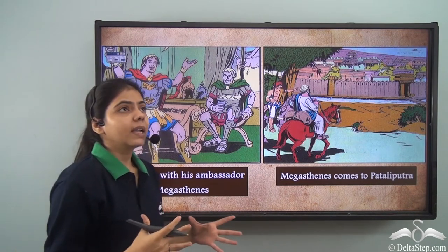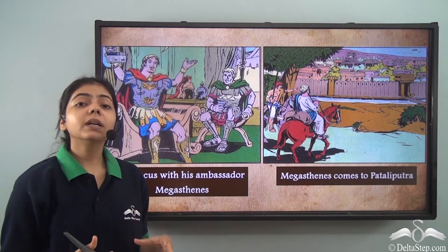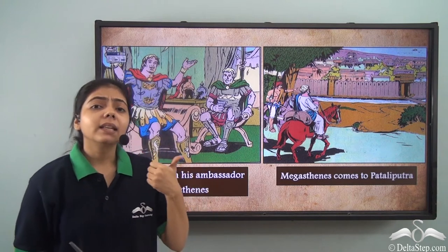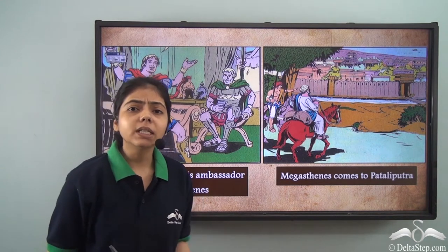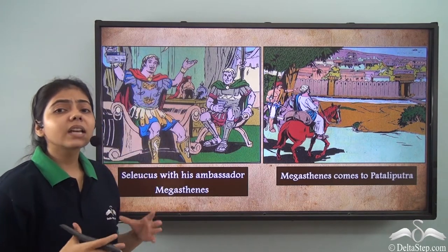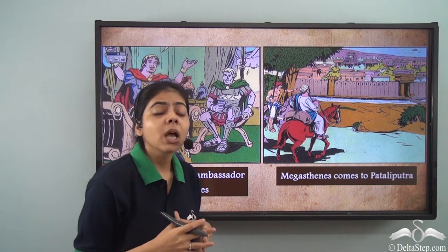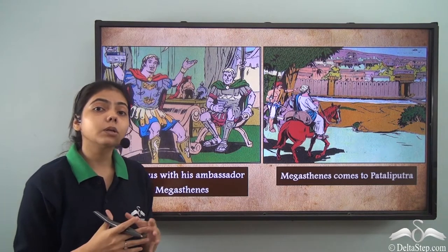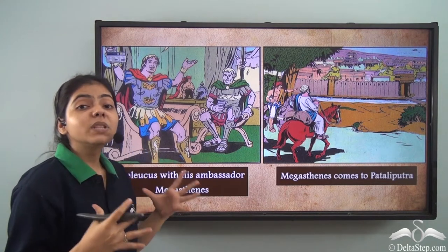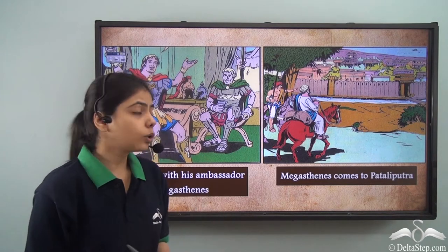What do you find in the Indica? In the Indica we have many things about whatever Megasthenes observed during his stay in the court of Chandragupta Maurya — like the life of people, the society, the polity, the administration and many other things. In short, Indica gives us much information about how the society was, how the administration worked, how the people used to live, and how the empire was governed.